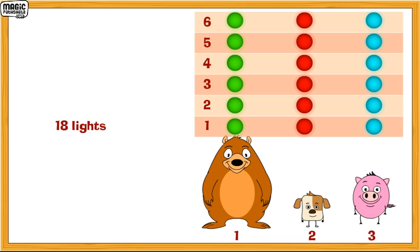After dividing 18 lights among 3 people, everyone gets 6 lights. So 18 divided by 3 is equal to 6.